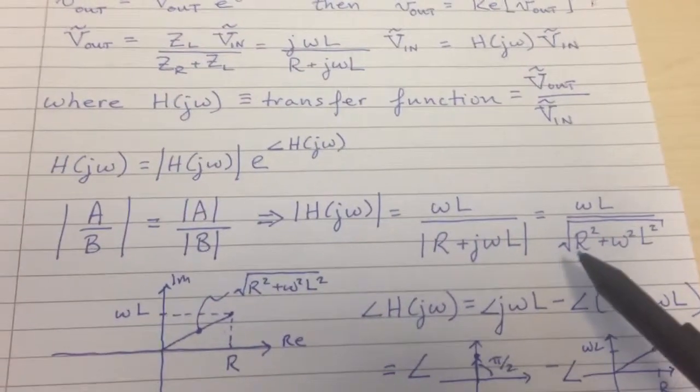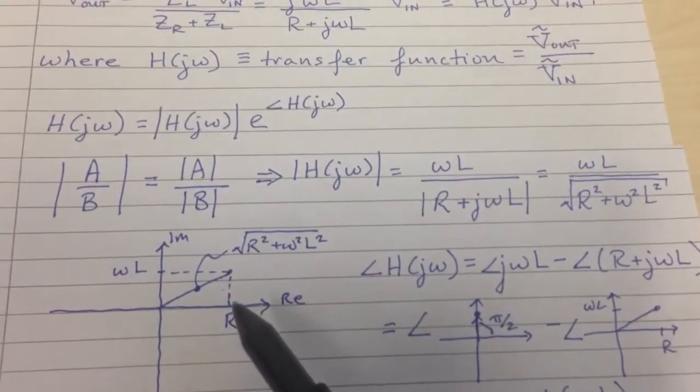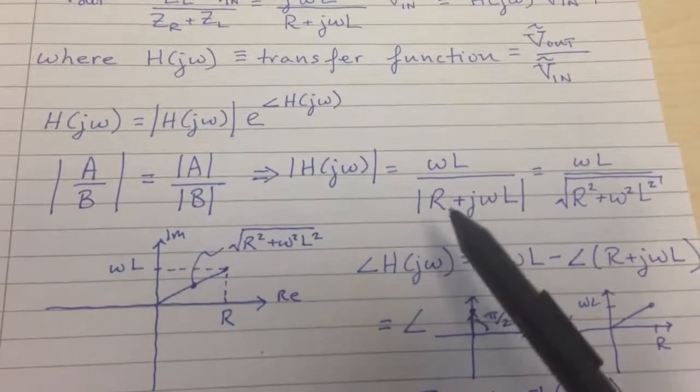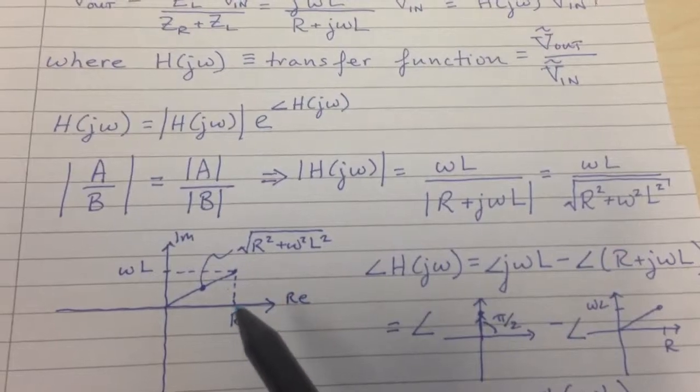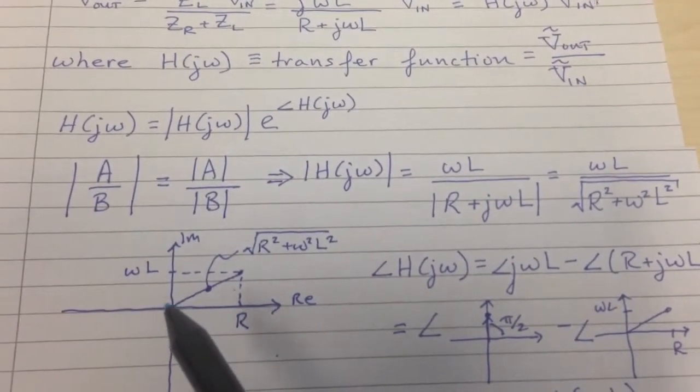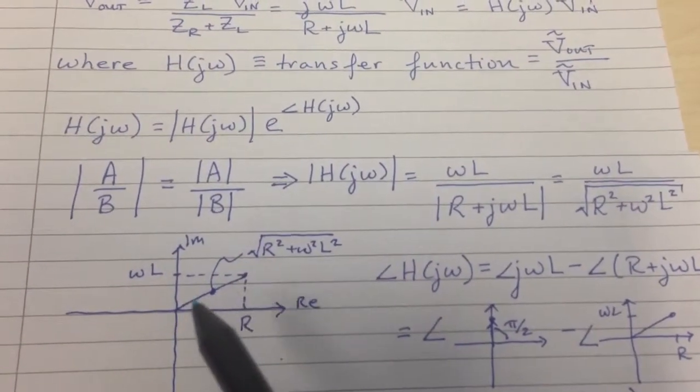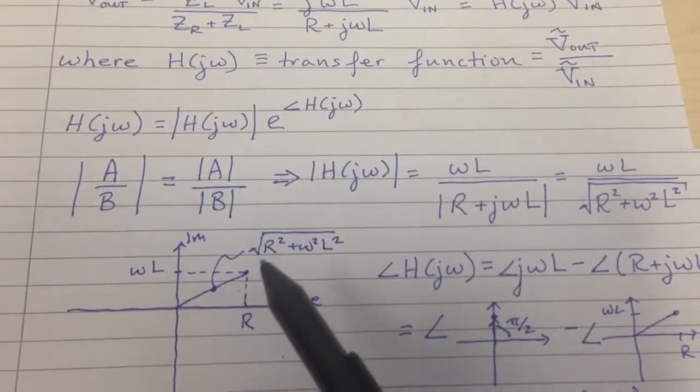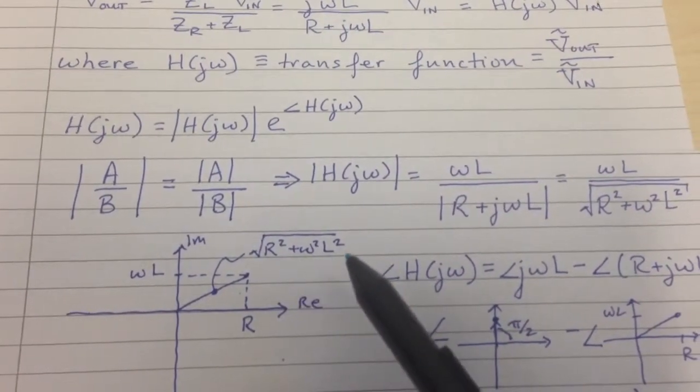R plus jωL, that magnitude is a little trickier if you don't remember your complex numbers. This complex number in the polar coordinate system is going to look like the real part R along the x-axis and the imaginary part ωL across the imaginary axis. And so the magnitude is the length of this hypotenuse, just from the Pythagorean theorem, square root of R squared plus ω squared L squared.